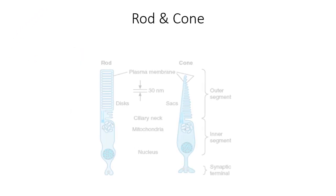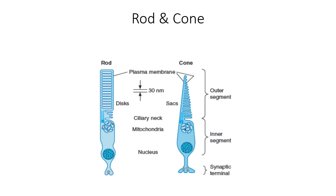The structure of rods and cones: there are two types of photoreceptors — rods and cones — named because of their characteristic shape. Rods are responsible for monochromatic, dark-adapted vision, and there is only one type of rod present in the retina. There are three subtypes of cones, responsible for color-sensitive vision experienced in brighter environments. Rods outnumber cones by at least 16 to 1.